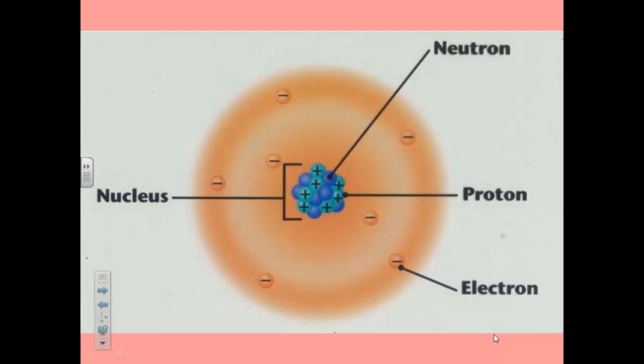Electrons move around the protons and neutrons. An electron, as shown in the picture here, has a negative charge. Electrons may join or leave atoms or be shared between atoms.